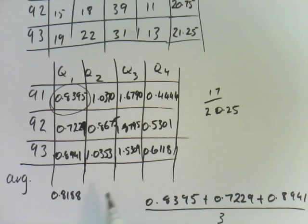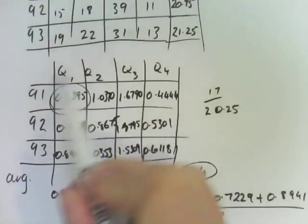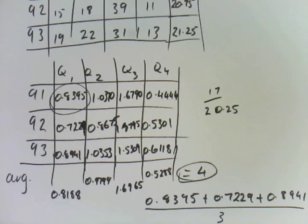The interesting thing about these seasonal indexes is if I add all of them together it should come out at four because I have four seasons, four quarters. So I'm just going to confirm that: 0.8188 plus 0.9799 plus 1.6965 plus 0.5288 is 4.024.